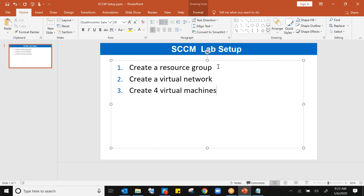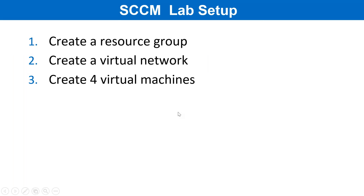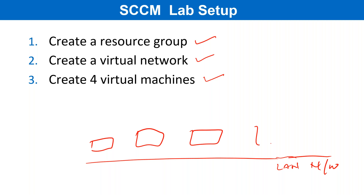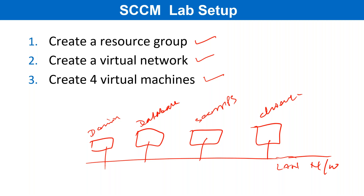Just to recap what we have done today in this session: we created a resource group, then we created a virtual network, and then four virtual machines. The architecture is one LAN network with four virtual machines connected — Domain, Database, CCMPS, and Client — all connected to the same LAN network. Once you are done, make sure you stop them. Thank you for attending the session. I hope it was informative and I'll meet you in the next session.